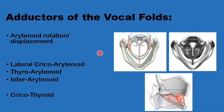The arytenoid cartilage plays a pivotal role in the adduction of the vocal folds and the closure of the glottis during swallowing. Three of the vocal fold adductors are attached directly to the arytenoid cartilage, including the major vocal fold adductor, the lateral cricoarytenoid muscle, the thyroarytenoid muscle, and a small contribution from the interarytenoid muscle. A fourth muscle, the cricothyroid, helps in vocal fold adduction and elongation.